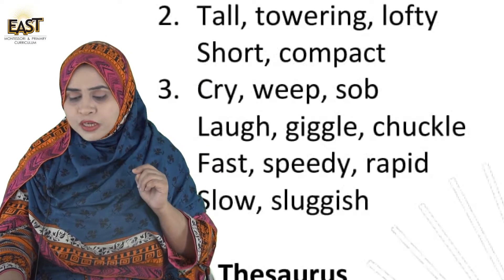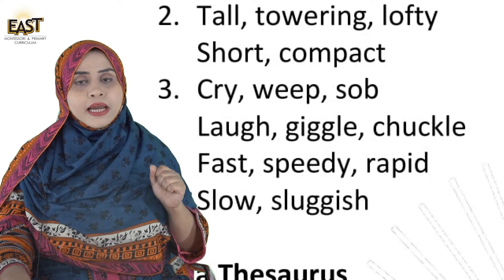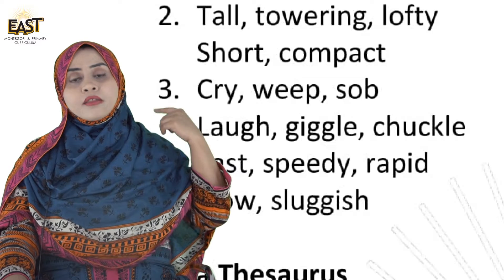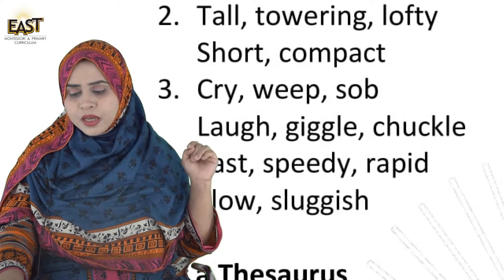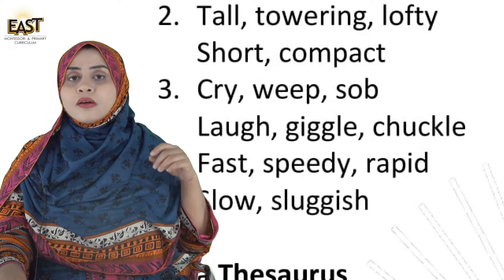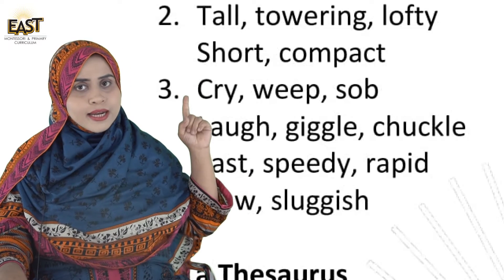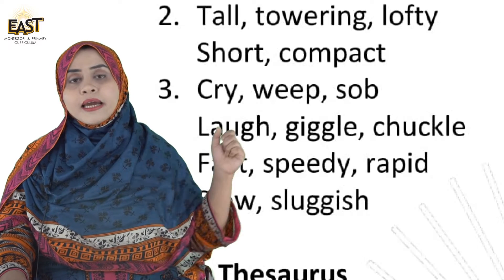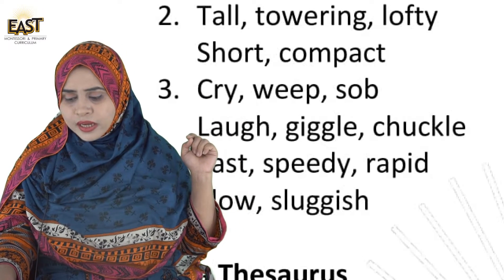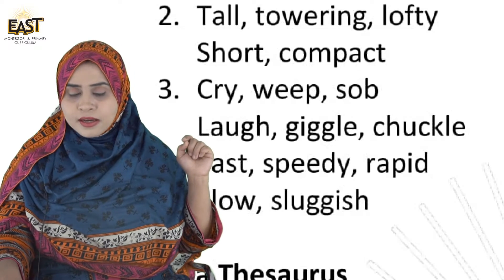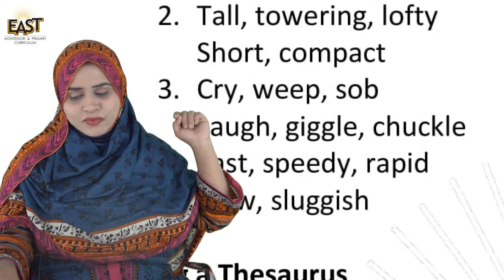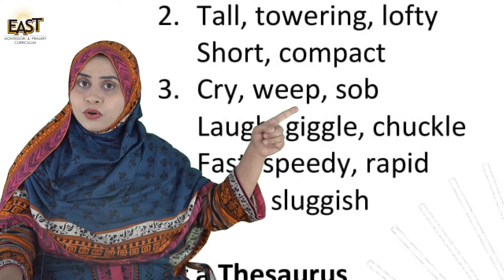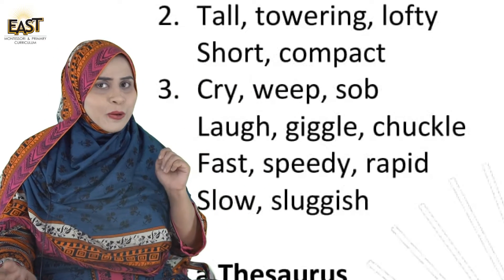Now number 3. The first word is 'Cry' — rona — so write it in Group 1. Then 'Laugh' — this is the opposite of cry, so write it in Group 2. Next is 'Weep', which means cry — rona dhona — so write it in Group 1. Then 'Sob', which also means rona, goes into Group 1. 'Chuckle' means hansna, so it goes into Group 2. And 'Giggle' means khil khilana, so it also goes into Group 2. I hope you all are enjoying!